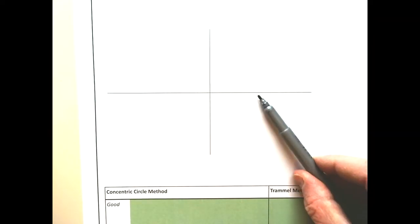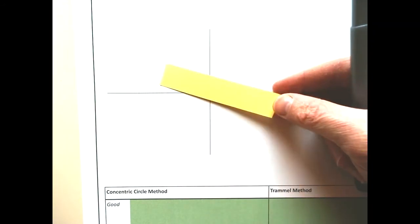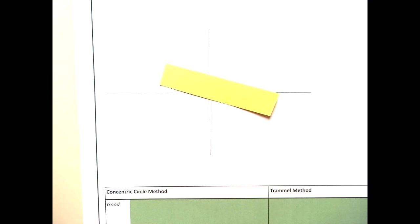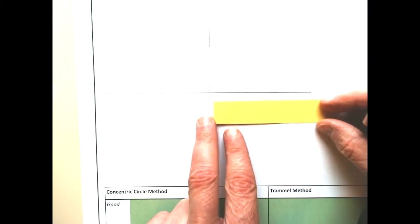To draw an ellipse with the trammel method we need to have a major axis and our minor axis. Trammel is a little piece of paper, about 100mm long, that we are going to use to find our points.